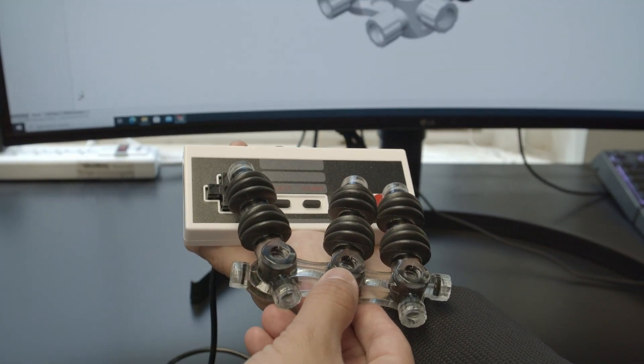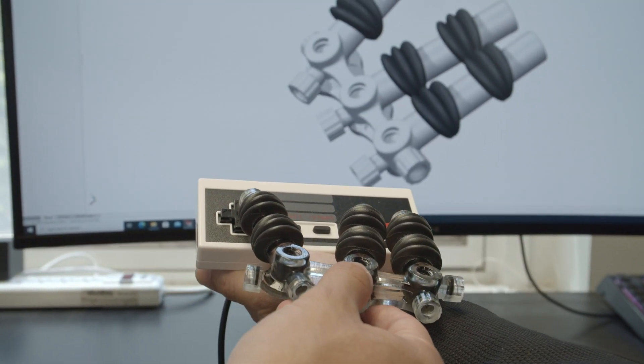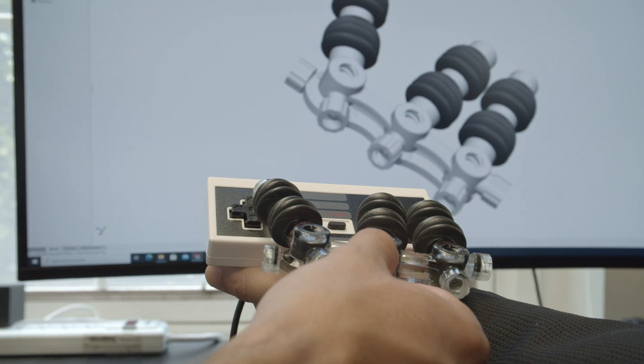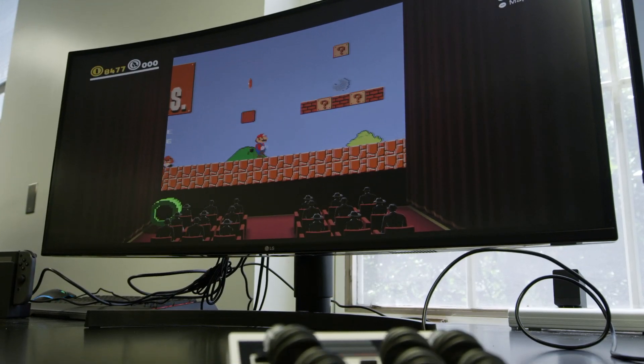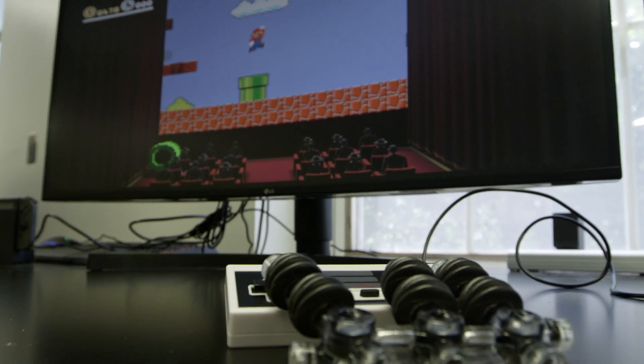The idea was basically to 3D print an entire soft robotic hand to be able to play Nintendo and specifically to be able to beat the first level of Super Mario Brothers on the original Nintendo Entertainment System.